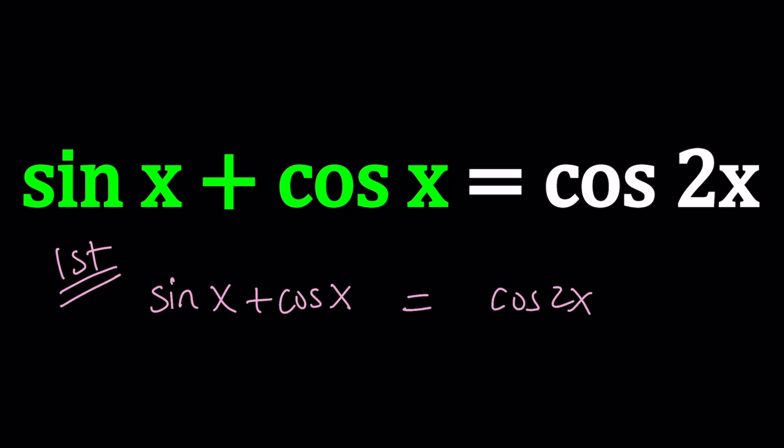And the reason behind squaring both sides is the presence of sine x plus cosine x. Whenever you see sine x plus minus cosine x, you should square both sides if you can't do anything else, because that gives you good things.